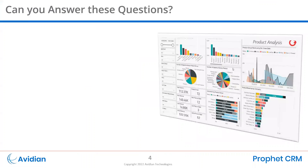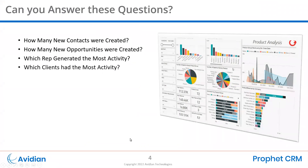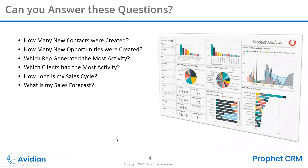Think about it in terms of answering certain key questions. How many new contacts were created? How many new opportunities were created? That will give you an indicator of the health of your sales pipeline. Which reps generated the most or least activity? What clients had the most or least activity — maybe some are underserved. How long is your sales cycle? How long does it take to get a new client? All of this will help you forecast your new business and sales.